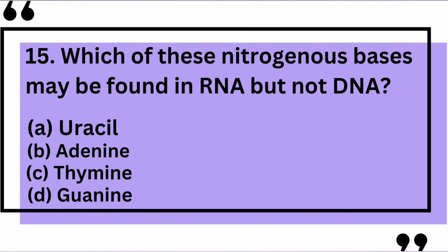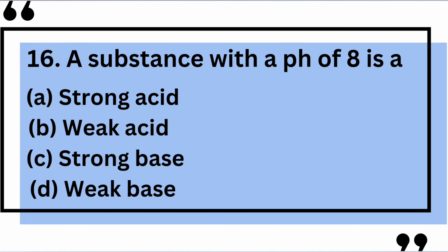Which of these nitrogenous bases may be found in RNA but not DNA? Yes, the correct answer is A: uracil. A substance with a pH of 8 is a — the correct answer is D: weak base.